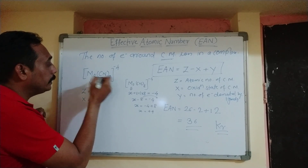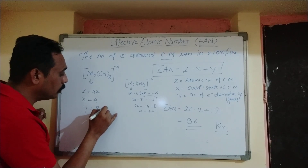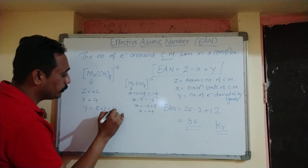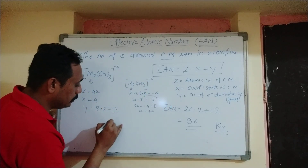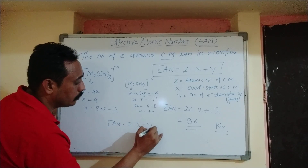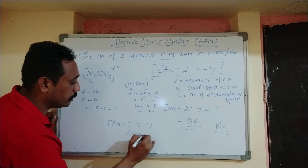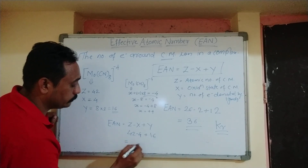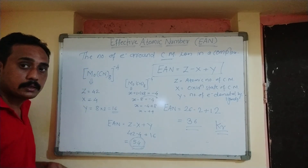Now the number of electrons donated by the ligands is Y. How many ligands are there? 8 ligands. So 8 into 2 equals 16. Now putting the values into the formula: EAN equals Z minus X plus Y, that is 42 minus 4 plus 16, which equals 54. So this is the atomic number of the noble gas xenon.